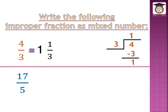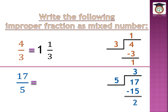Let's take another example: 17 over 5. This is an improper fraction and I want to change it to a mixed number. We use long division: 17 divided by 5. In the 5 times table we don't have 17, but the nearest number is 15. So 3 times 5 equals 15. We subtract: 17 minus 15 equals 2. So the whole number is 3, the numerator is 2, and the denominator is 5.